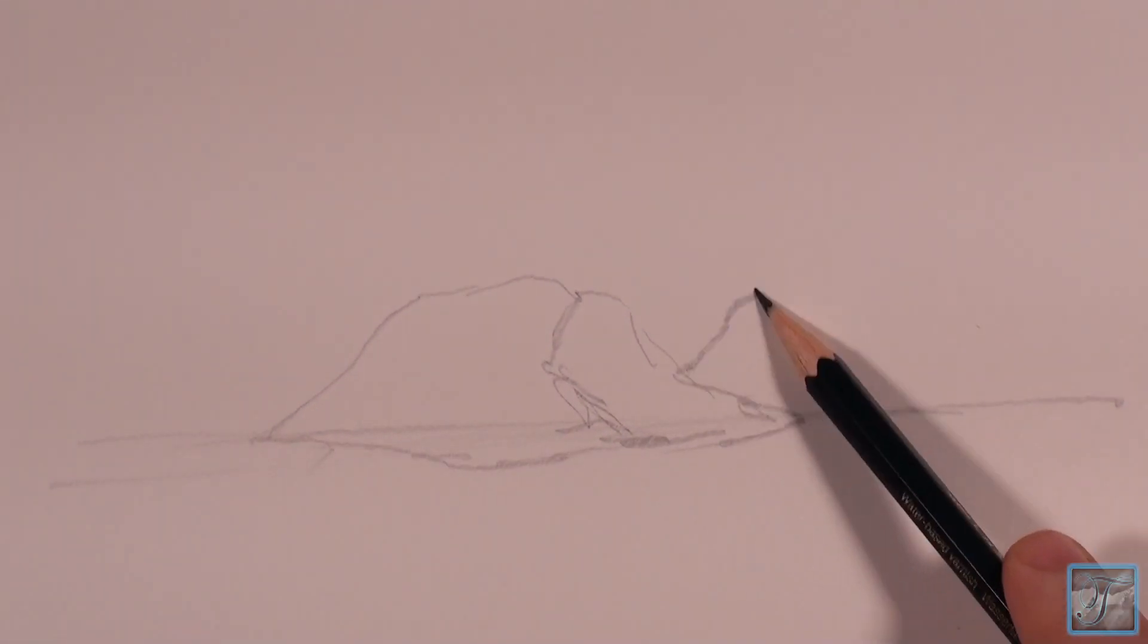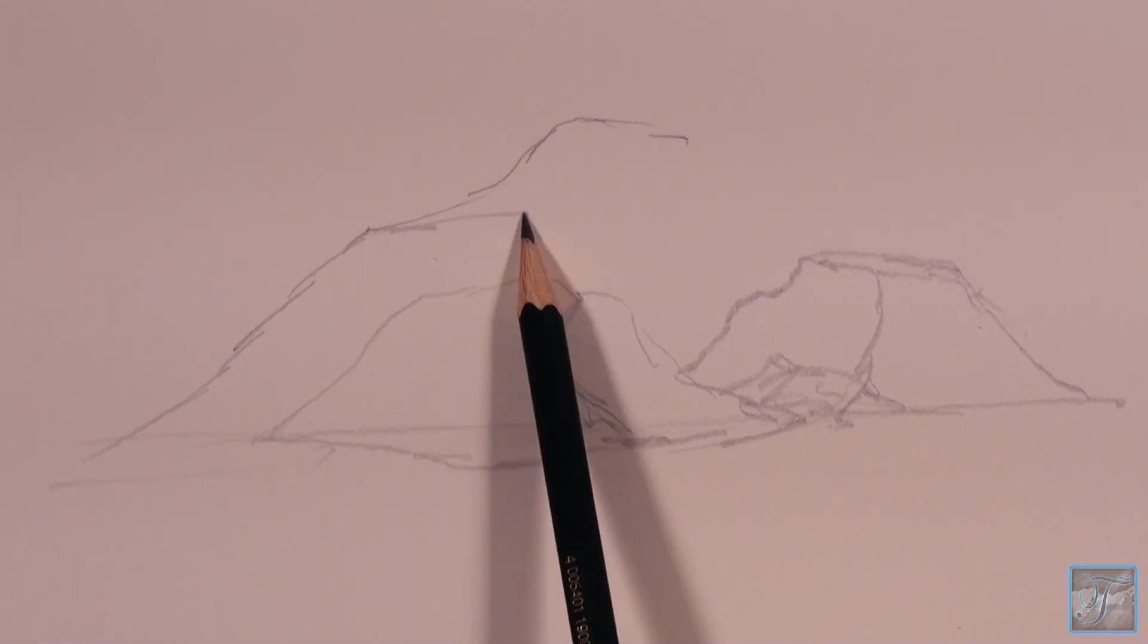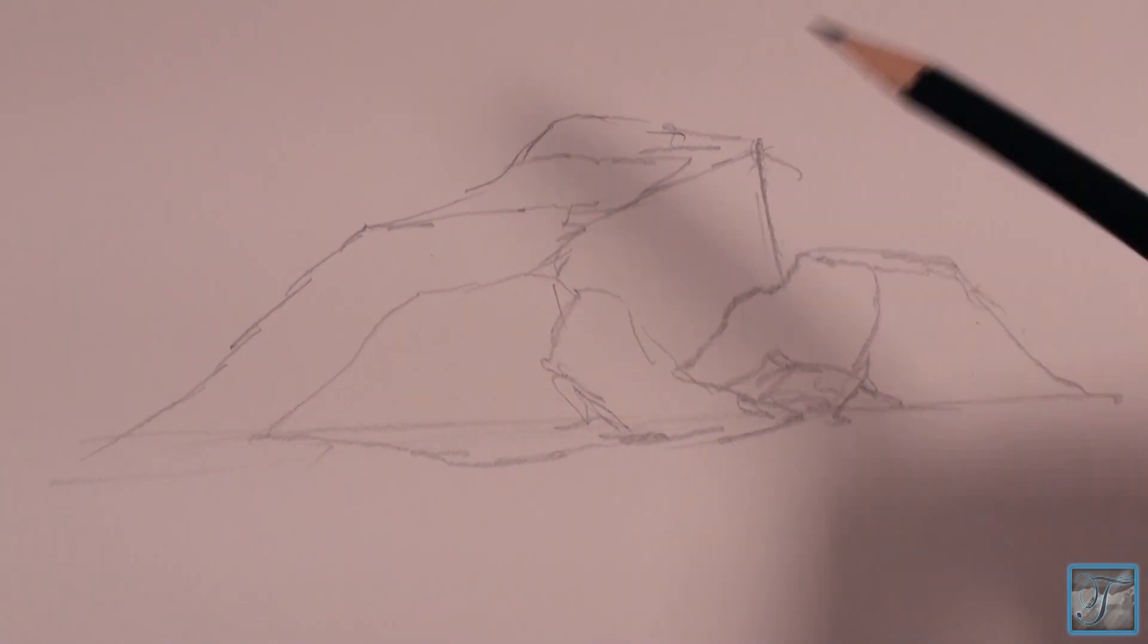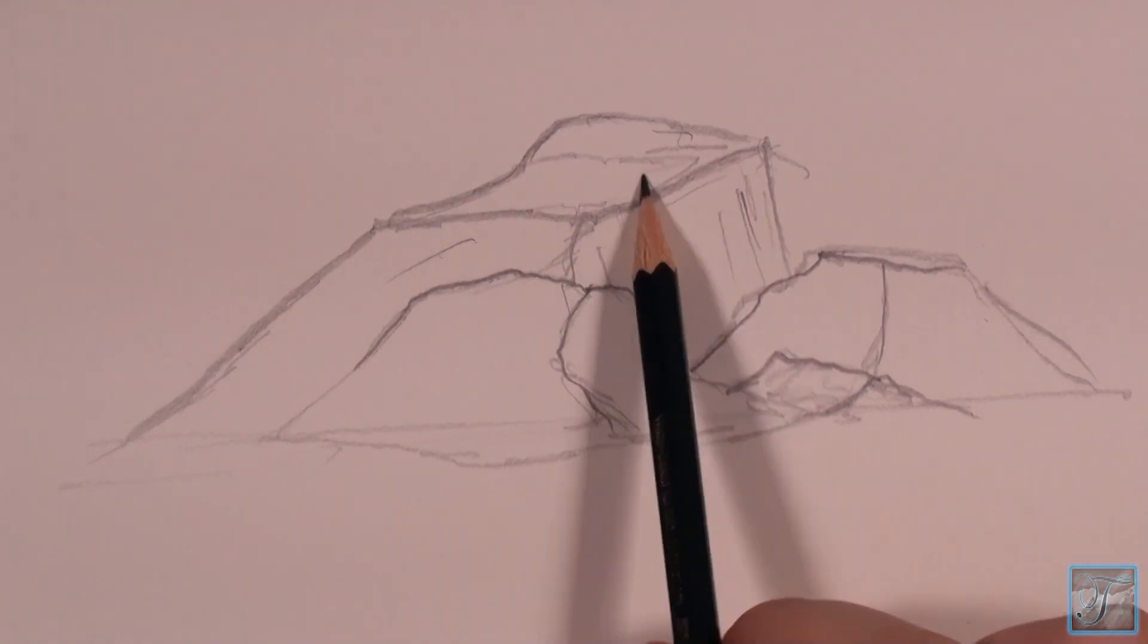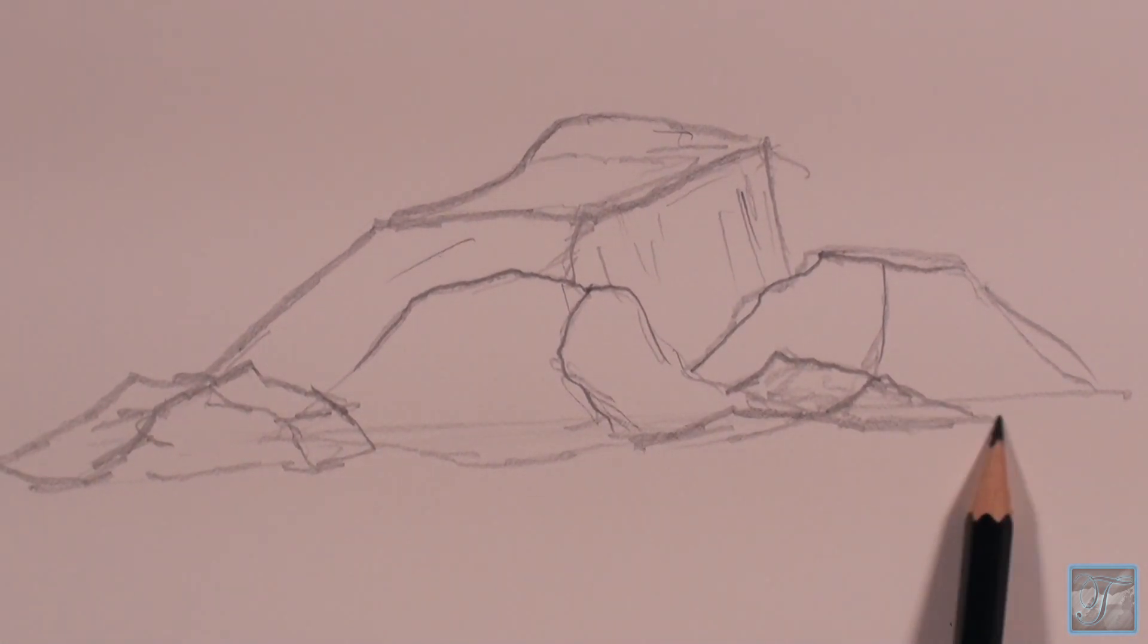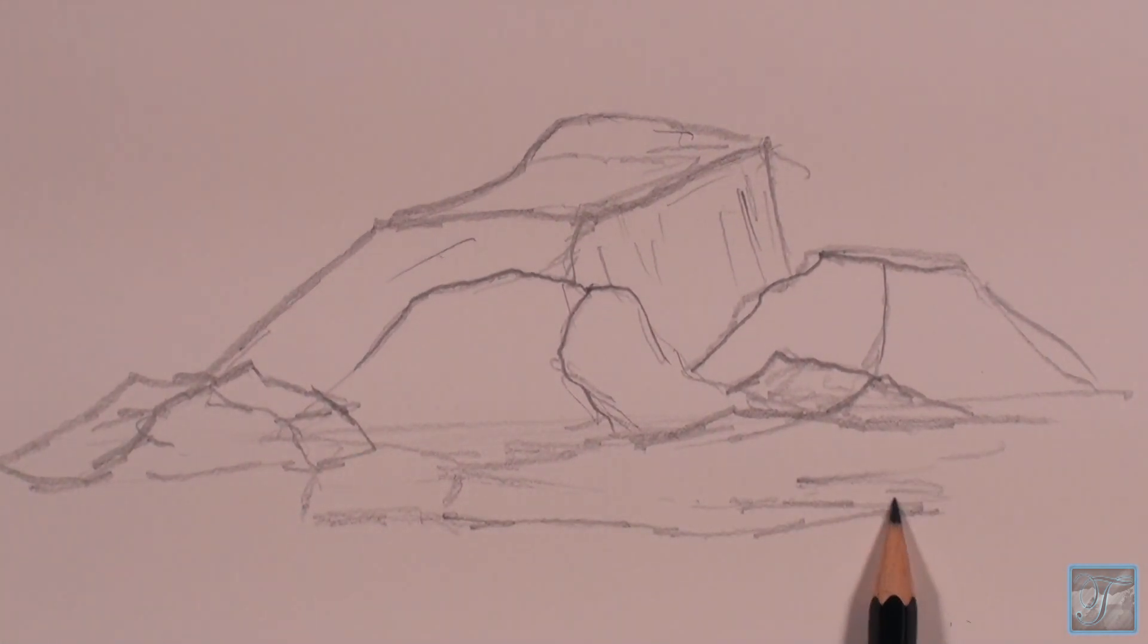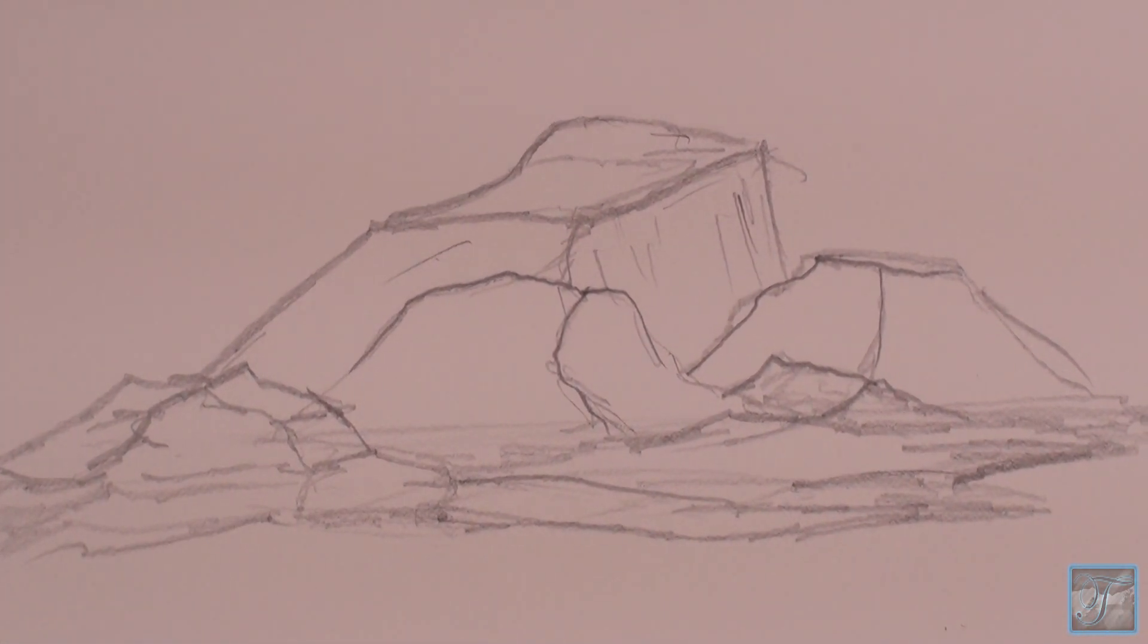Rocks are more often than not seen in clusters. In this example, I started off with a simple rock and then started adding more similar rocks around it. Then I started to vary the design and add some more rocks that were different shapes and sizes as well. I finished these rocks off just by adding a little bit of detail here and there to add to the overall effect.